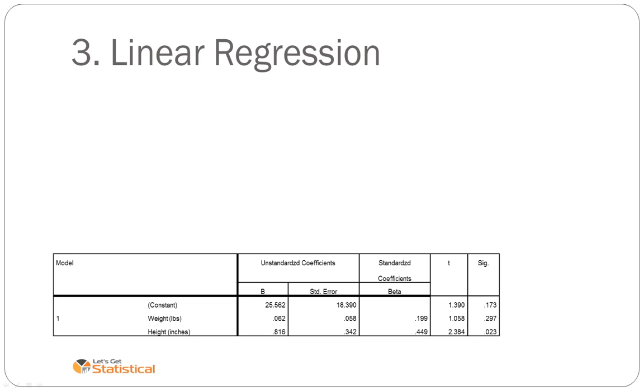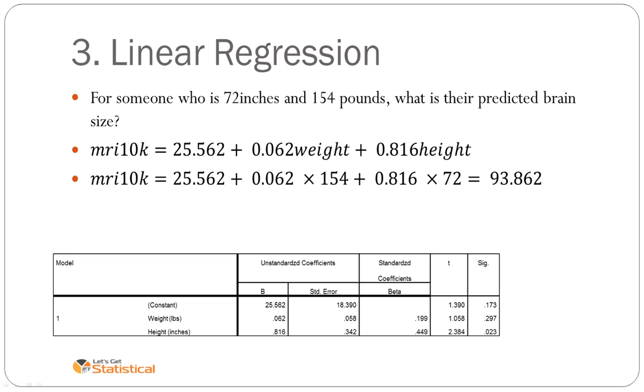We can also predict from this linear regression equation for someone who's 72 inches and 150 pounds, substitute that into the formula and we can predict what their predicted brain size is going to be and we can write a sentence about it as such. We can also calculate the residual. We won't go into details, but that's done exactly the same way as we did it for simple linear regression.